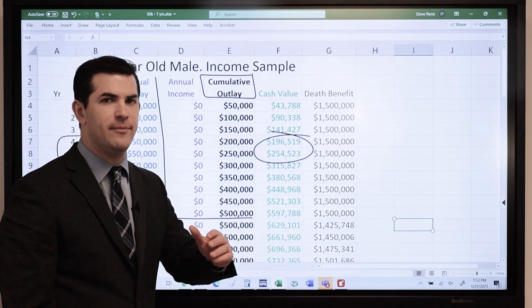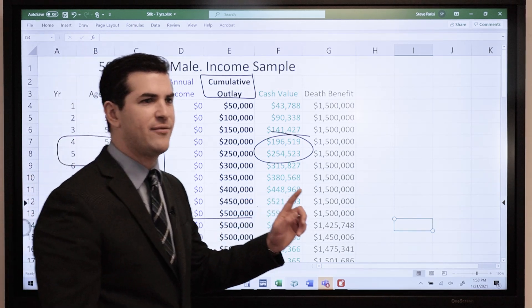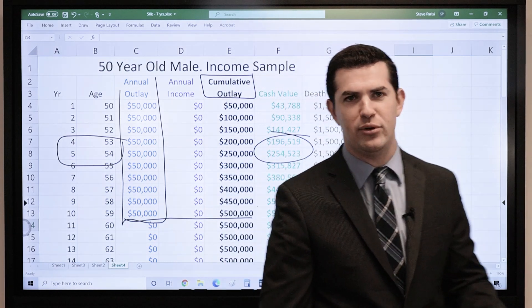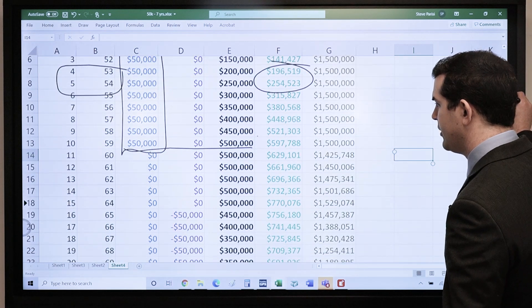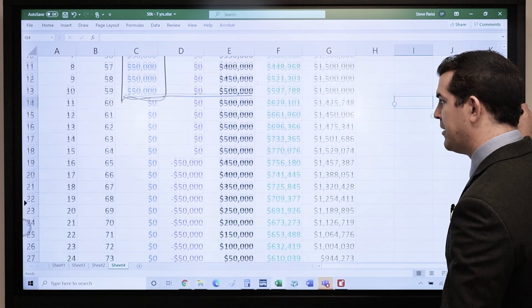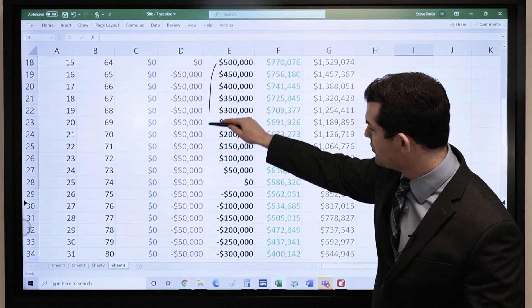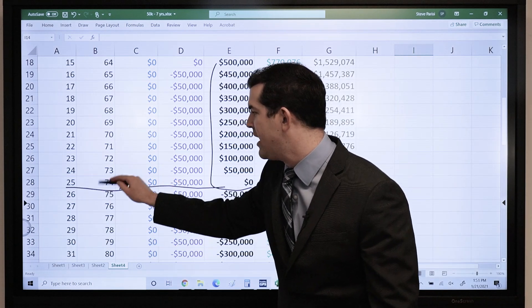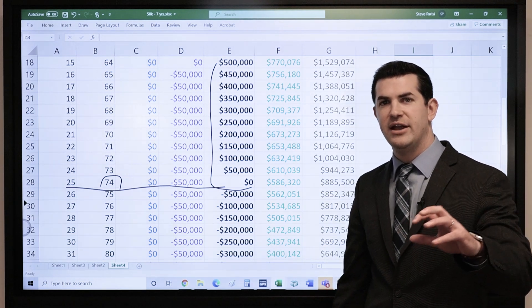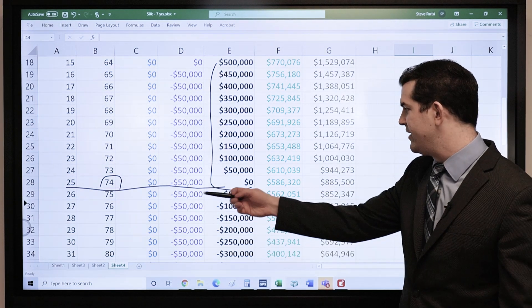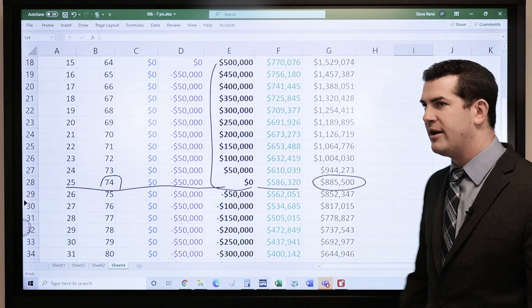When I start to pull out income, I want to pull that out. But also what happens after I pull out $500,000? How much total can I pull out? This is a combination of withdrawals and loans. At age 65, he begins to pull out $50,000 per year. This is a level income stream. By year 25 or age 74, he's pulled out $500,000. He paid in $500,000, he pulled out $500,000. If he dies then, he's got $586,000 in cash and his net death benefit would be $885,000.